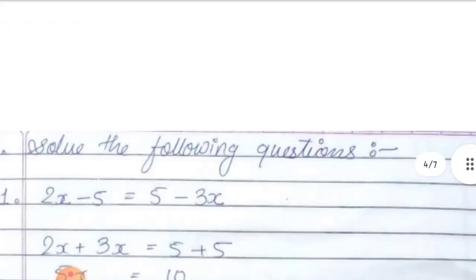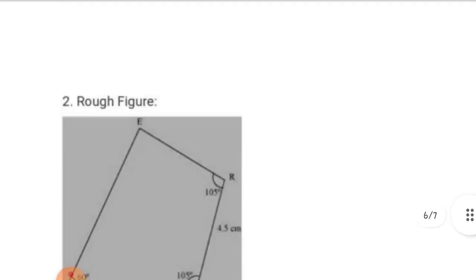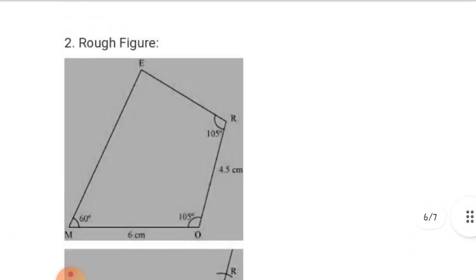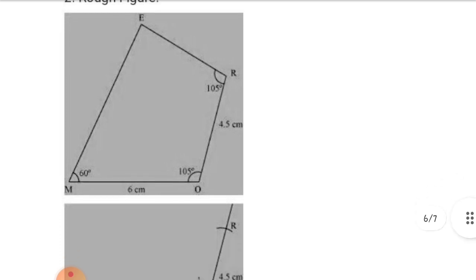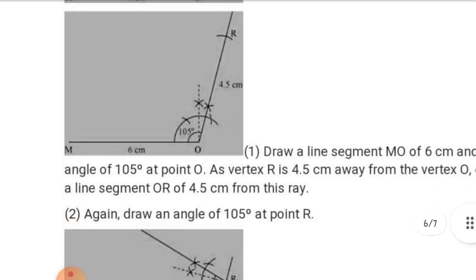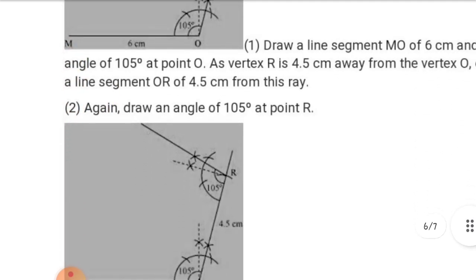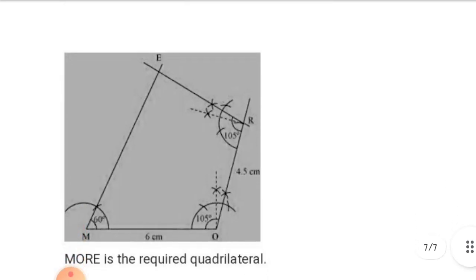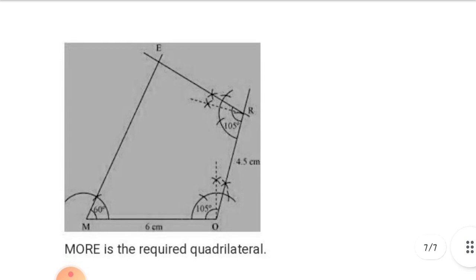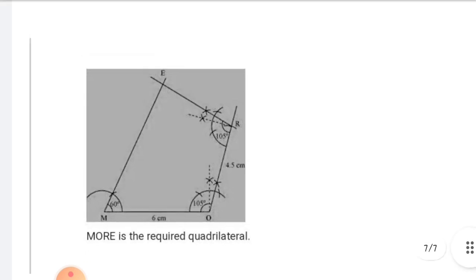Here we have the answer. You have to name it as KITE. This is the rough figure, and then you start the construction — step 1, step 2, step 3. KITE is the required quadrilateral.